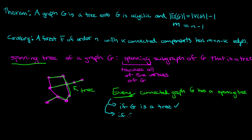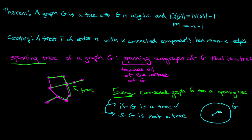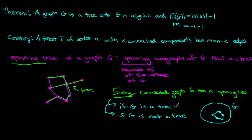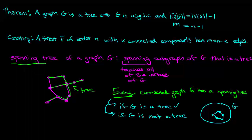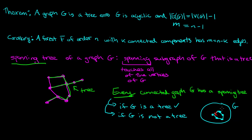If G is not a tree, that just means somewhere inside G you have some kind of cycle. Because G is a connected graph which is not a tree, so it must have a cycle — otherwise it would have been a tree. What you can do to find a spanning tree is to remove one of the edges of a cycle. The new graph may still have some cycles, so you just find another cycle and remove one of the edges on it.